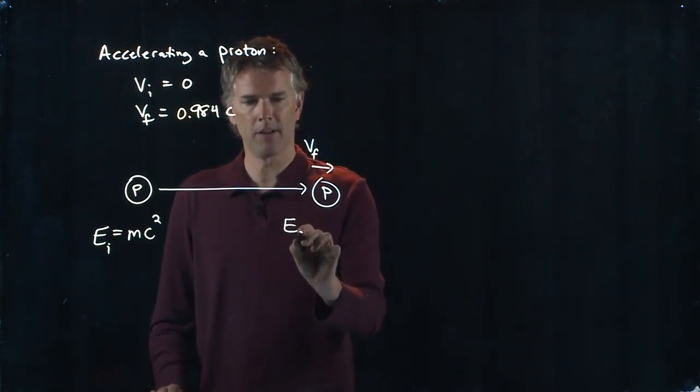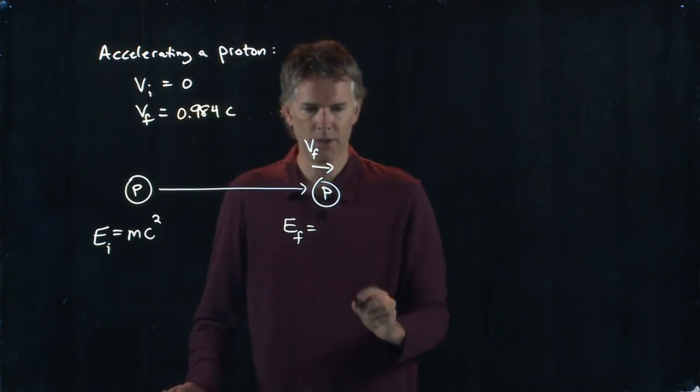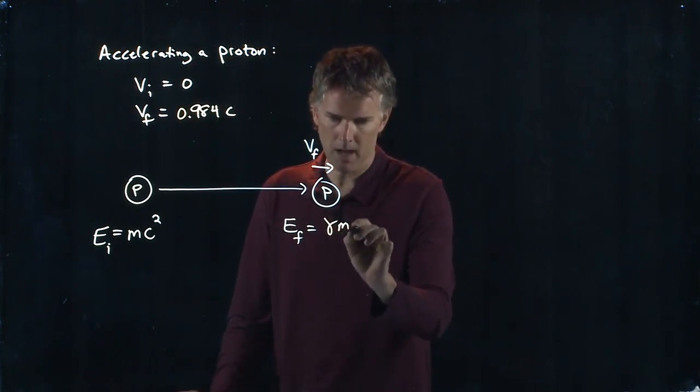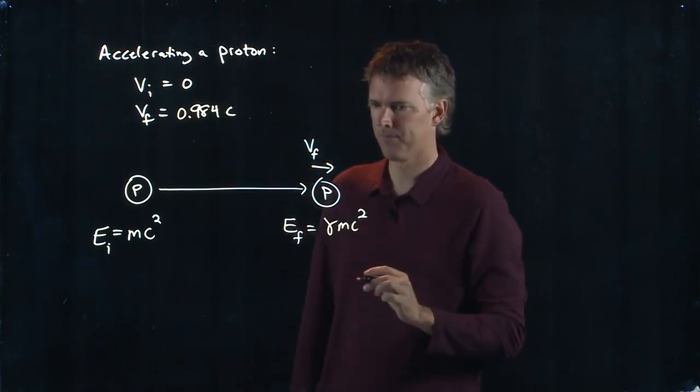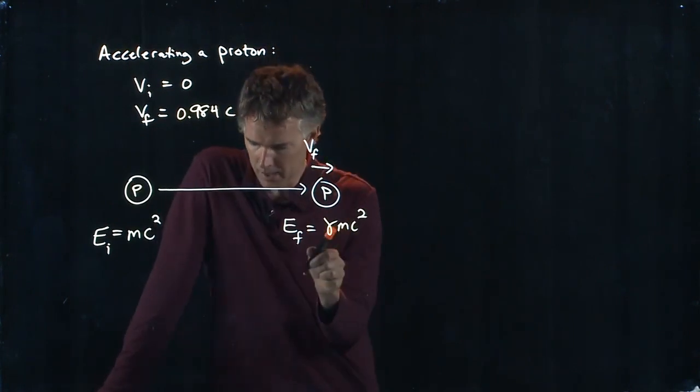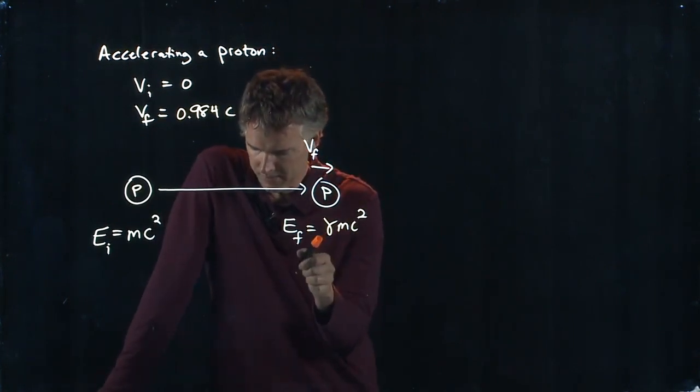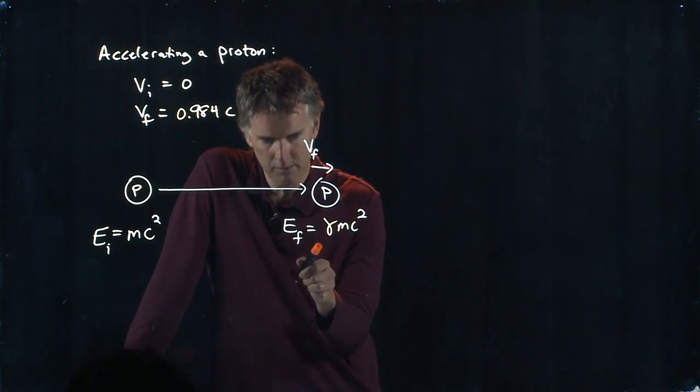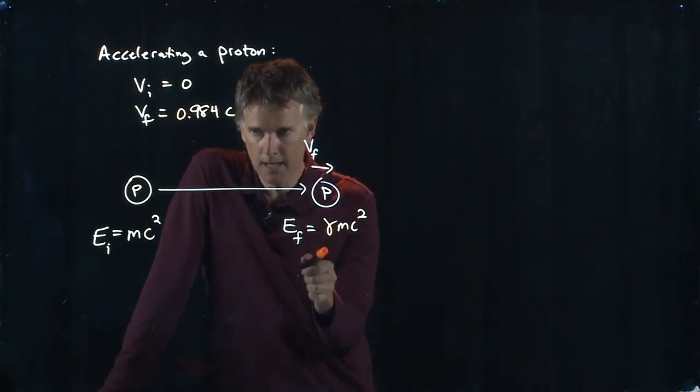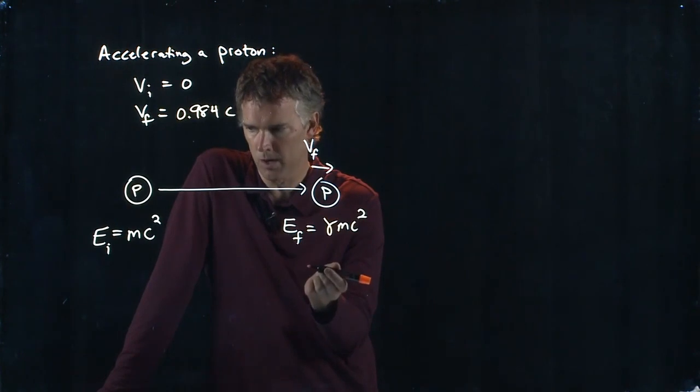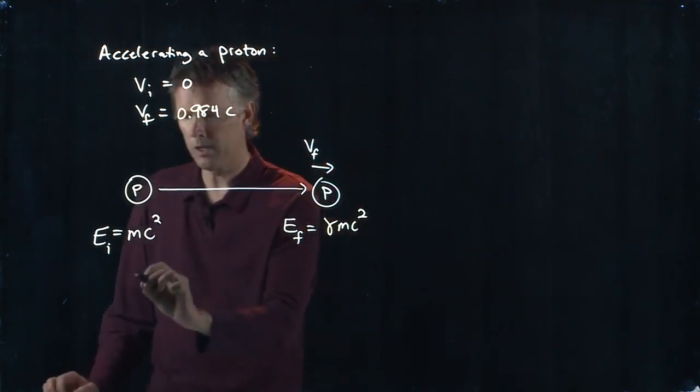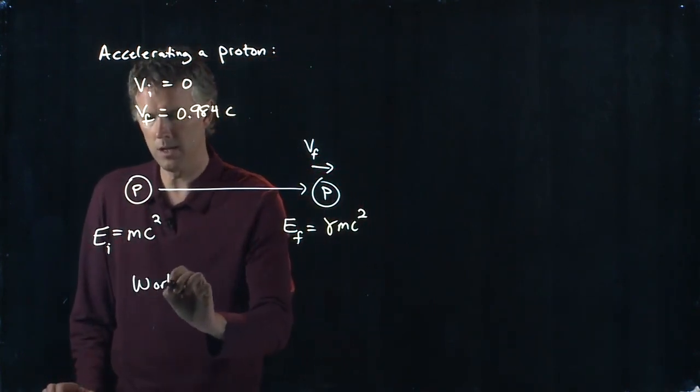When it starts moving, it now has a final energy which is gamma MC squared. Okay, so this gamma thing looks really critical to understanding what the total energy is. And if we can calculate gamma, we can probably figure out how much work is required because the work is just going to be the change in energy.